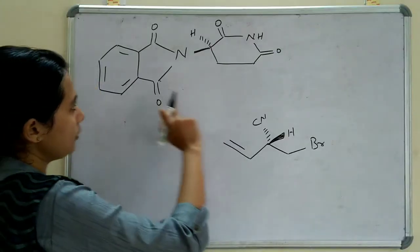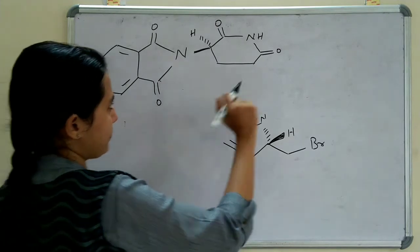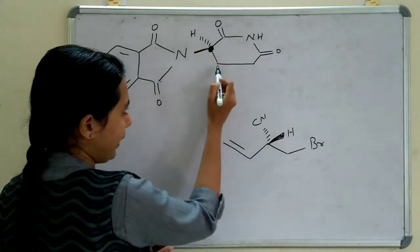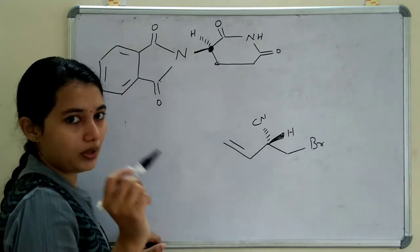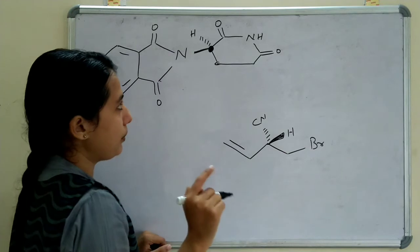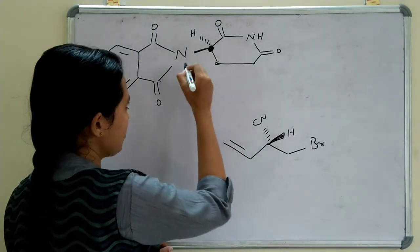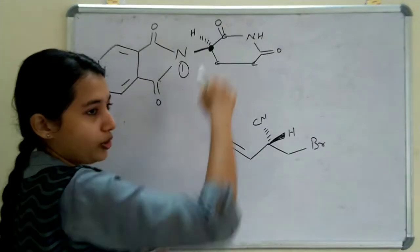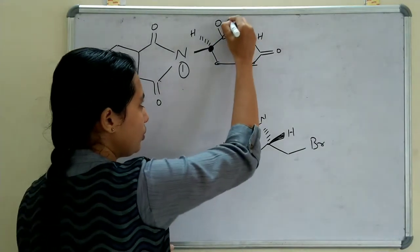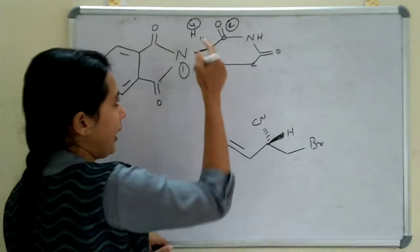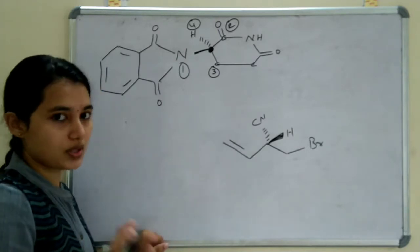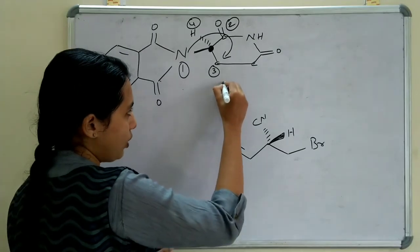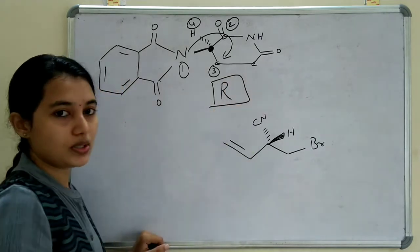Next example: the chiral carbon has substituents nitrogen, hydrogen, CO, and a carbon. Nitrogen gets 1 (highest atomic number). The carbon attached to oxygen (double bond counts as 2 oxygens) gets 2, the other carbon gets 3, and hydrogen gets 4. Hydrogen is at the below position, so no reversal needed. Rotating 1→2→3 is clockwise, so the configuration is R.